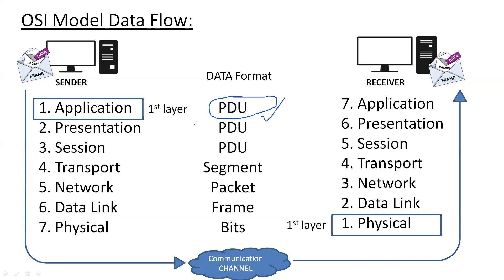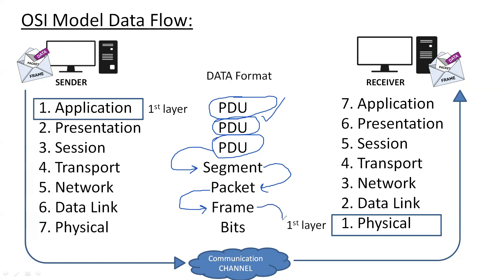Regarding data formats: on the Application, Presentation, and Session layers, the data is in the form of PDU. Then data slicing is done on the Transport layer through segmentation. The IP address is added on the Network layer, and the MAC address is added on the Data Link layer. Finally, the data is converted into bit format — a combination of 0s and 1s.